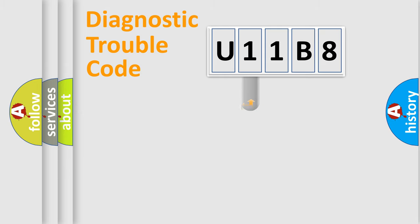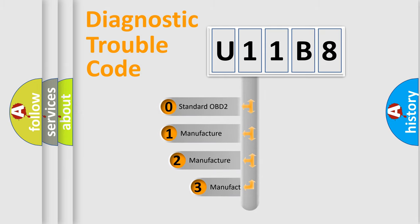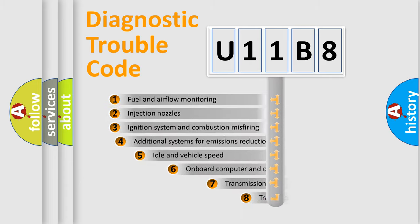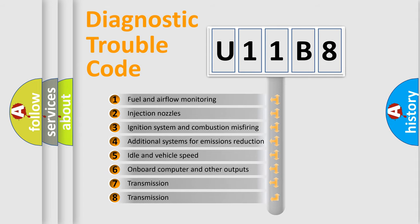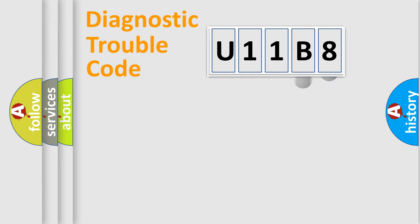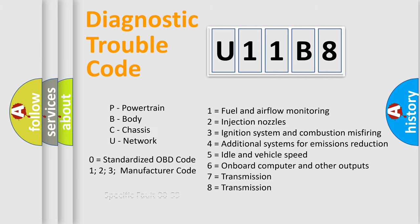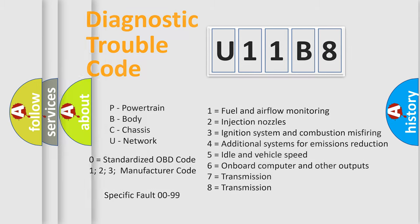This distribution is defined in the first character of the code. If the second character is expressed as zero, it is a standardized error. In the case of numbers 1, 2, 3, it is a more specific expression of the car-specific error. The third character specifies a subset of errors. This distribution is valid only for the standardized DTC code, and only the last two characters define the specific fault of the group.